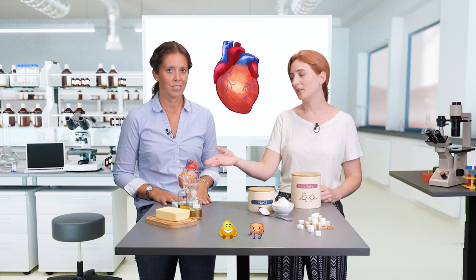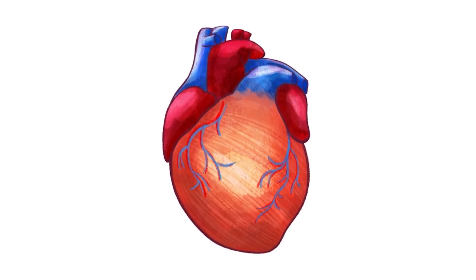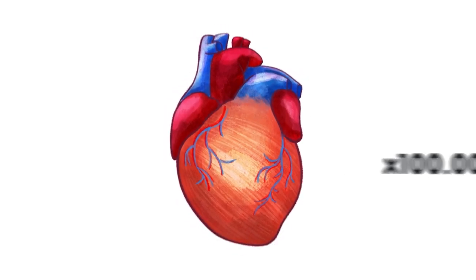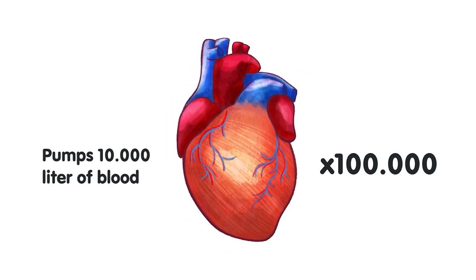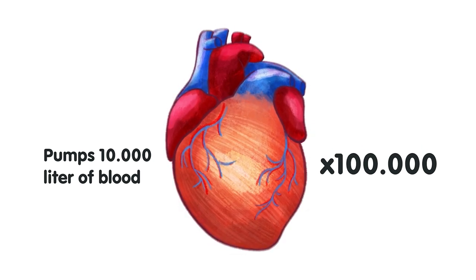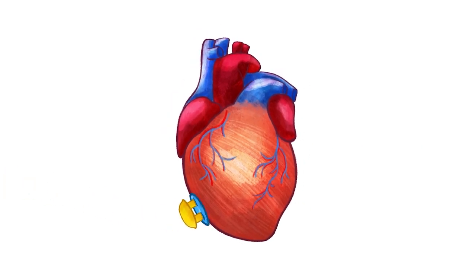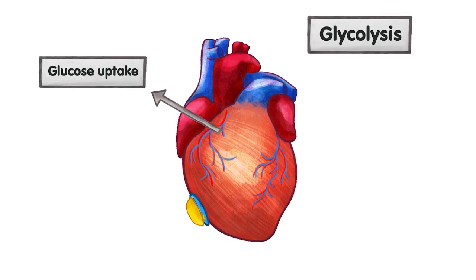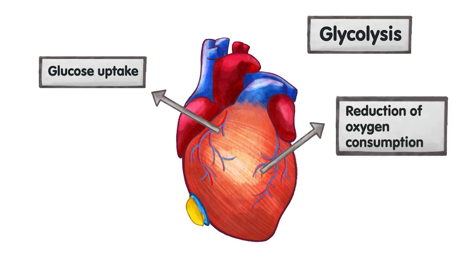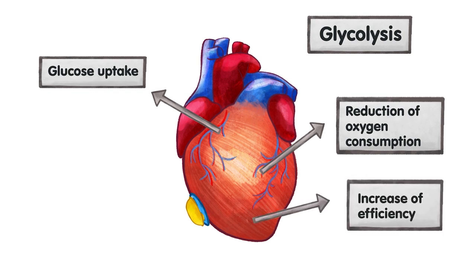One organ that needs a lot of energy is the heart, because of its continuous action. Each day it beats around 100,000 times and pumps about 10,000 liters of blood. Also here, insulin promotes glucose uptake and its utilization via a process called glycolysis. It also reduces myocardial oxygen consumption and decreases cardiac efficiency.